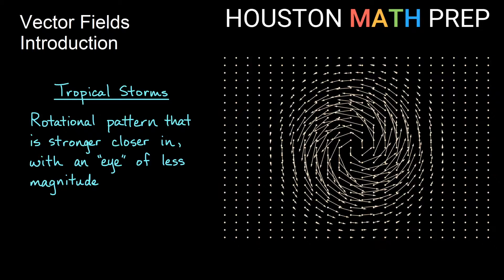Also in weather patterns like tropical storms we have a rotational pattern. We don't have very strong winds very far out, but then as we get closer and closer toward the center we get a greater magnitude of force that's swirling about, and then maybe in the center we have an eye of less magnitude.